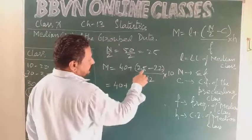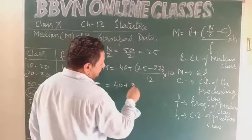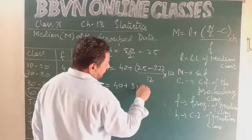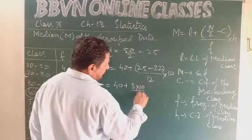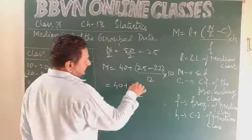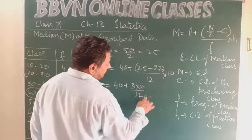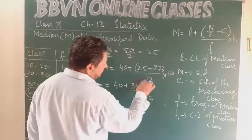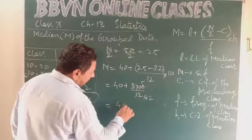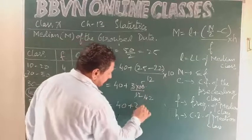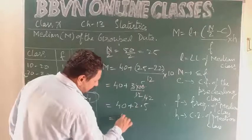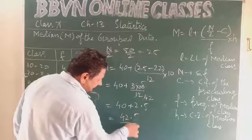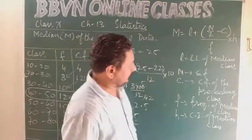So 40 plus 25 minus 22 is 3 multiplied by 10 whole upon 12. 3 goes 4 times, 2 goes 2 times, 2 goes 5 times. Now 40 plus 5 upon 2, that is 2.5, equals 42.5 is the median of this particular data.